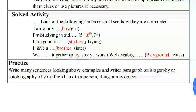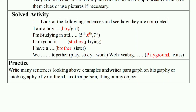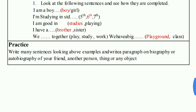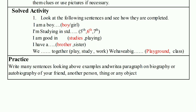First, look at the following sentences and see how they are completed. 'I am a boy' — the word 'boy' is taken from the bracket. If you are a boy, write 'boy'; if you are a girl, write 'girl'. 'I am studying in standard' — whichever standard you are in, like 6th, choose that option. 'I am good in studies.'